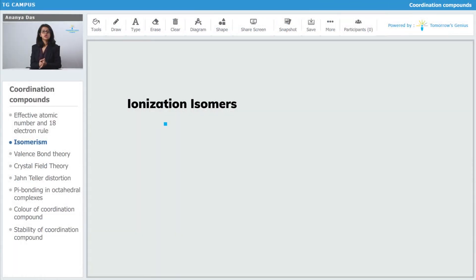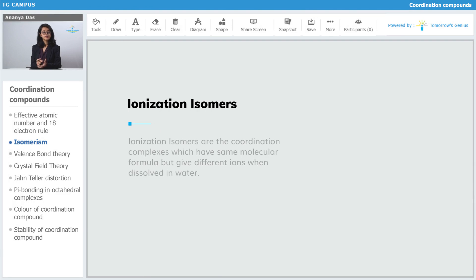Now let us talk about different types of structural isomers. First we come to ionization isomers. Ionization isomers are the coordination complexes which have the same molecular formula but they give different ions when dissolved in water.